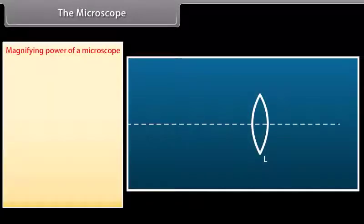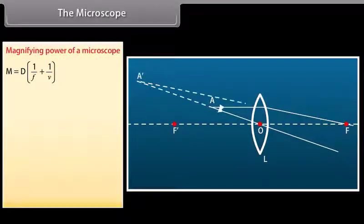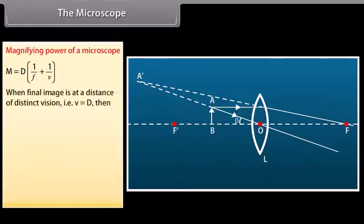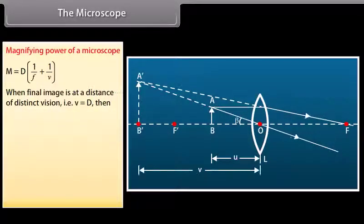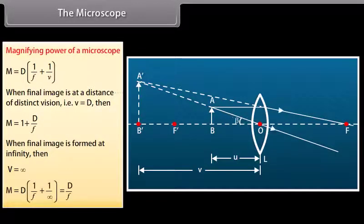The magnifying power of a simple microscope is M = D × (1/F − 1/V). When the final image is at the distance of distinct vision (V = D), M = 1 + D/F. When the final image is formed at infinity, M = D/F.